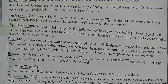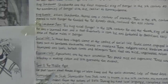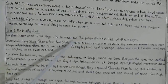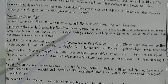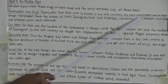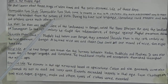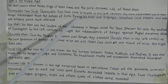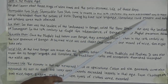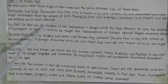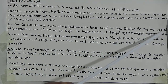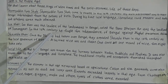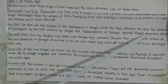Part 2, the Middle Ages. We all know that Isha Khan belonged to the Middle Ages. We shall learn about three kings of later times and the socio-economic life of those days. Samsuddin Iliya Shah came to power in the 14th century. His main achievement was to keep Bengal independent from the sultans of Delhi. During his time, local language and literature could prosper and poets and scholars were much admired. Isha Khan was the leader of the landowners in Bengal called the Baro Bhuiyyan. He was the landlord of Sonargaon. In the 16th century, he fought for the independence of Bengal against Mughal emperor Akbar.